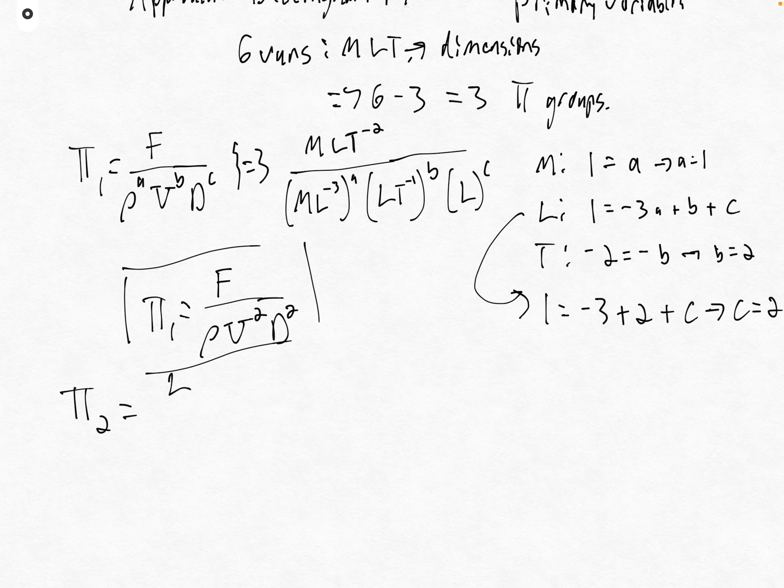We can write this as L over rho to the a, u to the b, d to the c. Or we can quickly see by inspection that the dimension of the cylinder length is length, which we can cancel out if we make c equal to one and a and b equal to zero. By inspection, pi two is L over d.